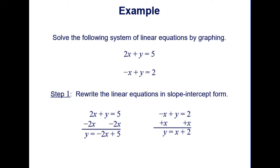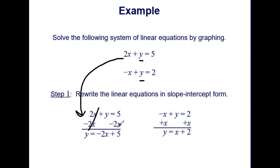Solve the following system of equations by graphing. We have 2x plus y equals 5 and negative x plus y equals 2. The first step is to rewrite both in slope-intercept form. In the first equation, we subtract 2x from both sides, giving us y equals negative 2x plus 5. In the second equation, we add x to both sides, giving us y equals x plus 2.